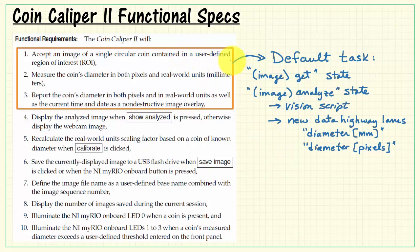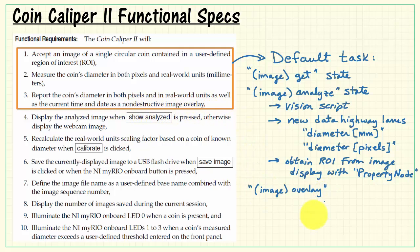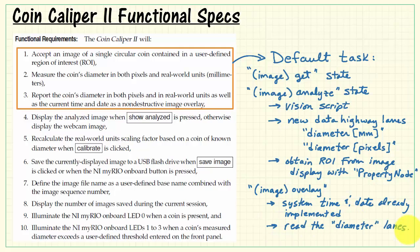We also need to allow for a user-defined region of interest. That means we need to obtain the region of interest, or ROI, from the image display using a property node. Finally, we are reporting the coin's diameter along with the current time and date on the non-destructive image overlay, and that happens in the image overlay state. The system time and date is already implemented in the machine vision app template. We will then need to read the diameter lanes to obtain the values that were written back in the image analyze state.